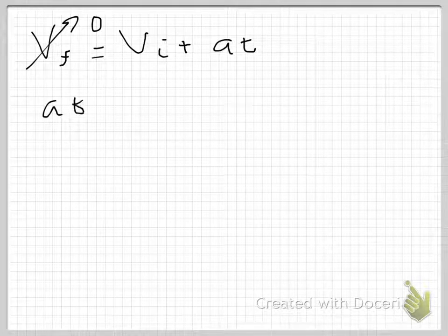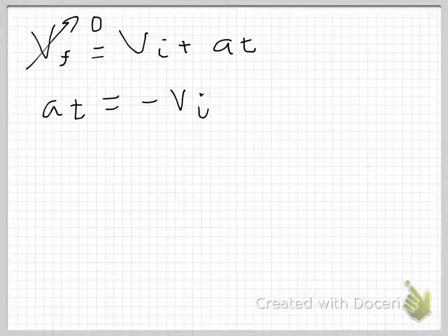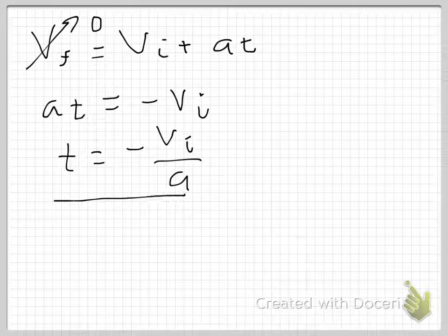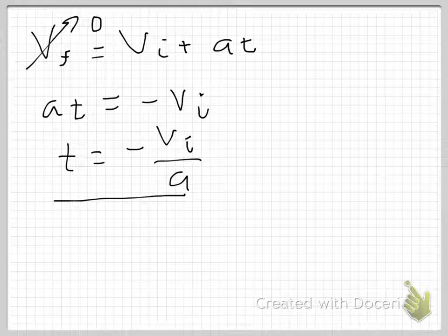V_final is 0, and I know V_initial and A — I'm just looking for T, so it's a simple matter of rearrangement. A·T equals negative V_initial. Then T equals negative V_initial over A. As far as I'm concerned, this problem is solved — I have the unknown expressed in terms of known quantities. If I want a numerical solution, I just plug in numbers.